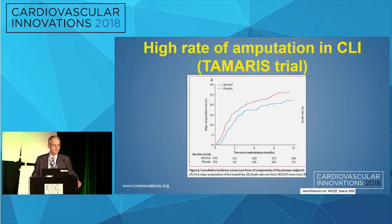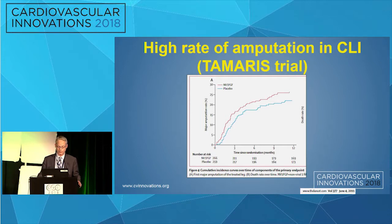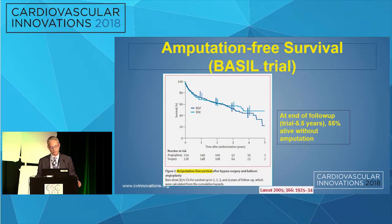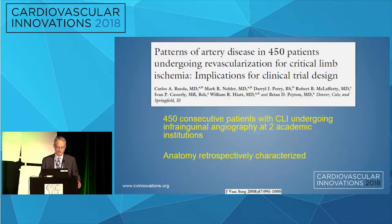The TAMARIS trial maybe provides the best natural history of critical limb ischemia. It was a gene therapy trial in patients with CLI who were thought not to have a revascularization option - a negative trial - but at 12 months both groups had amputation rates approaching 25%. Similarly, in the BASIL trial, a randomized trial of angioplasty versus bypass, at five years amputation-free mortality was around 50%. So bad outcomes in CLI patients.